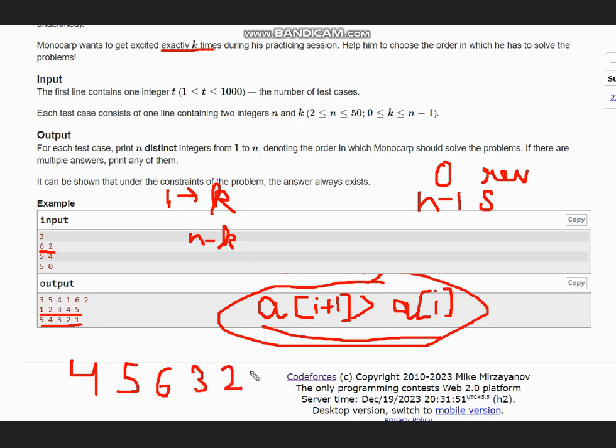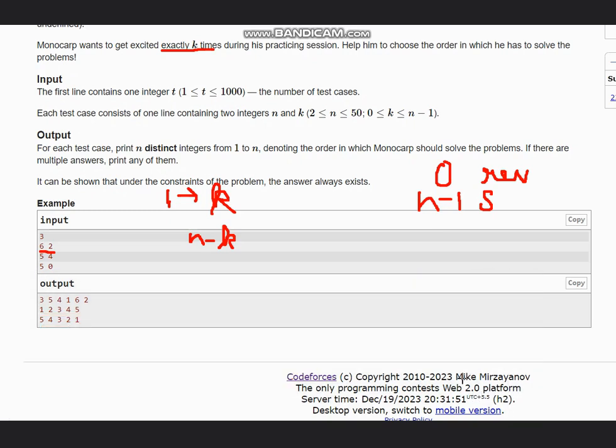So like this we can form the answer. You can also check another test case. In this test case, we have n equals 5 and k equals 0, so 5 minus 0 is 5. We start from 5 down to 1: 5, 4, 3, 2, 1. We didn't sort it because k is zero, so we were arranging from 5 down, giving us the reverse sorted array with no exciting moments.